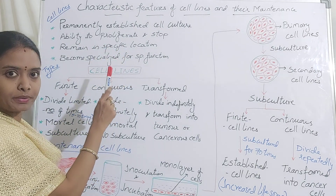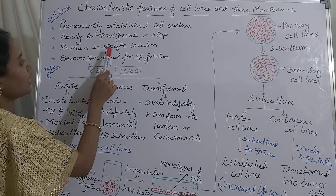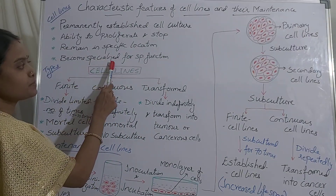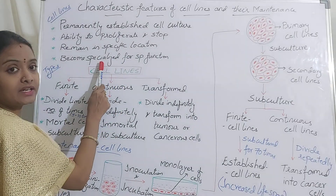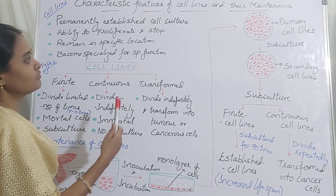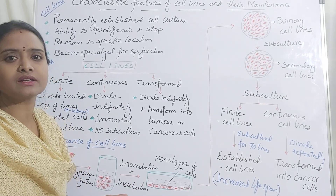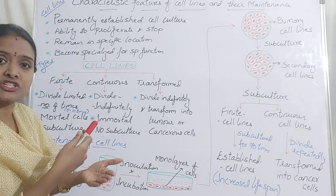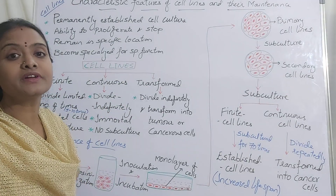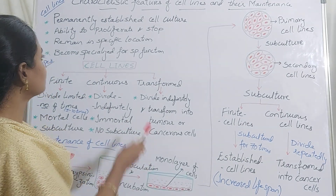As they are anchorage dependent cells, they utilize the nutrients provided. As they grow and divide further, they become specialized cells. That means they attain certain specific function — every cell will have a certain function. Skin cells have a different function, kidney cells have a different function, liver cells, pancreatic cells — each and every cell is a specialized cell because they have a specific function. So they are also called as differentiated cells, meaning they have differentiated or attained some function.